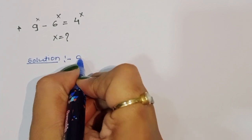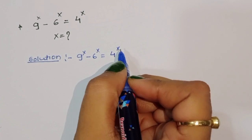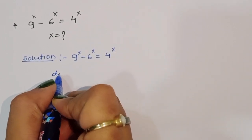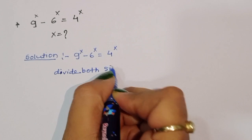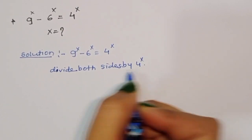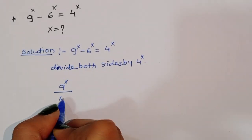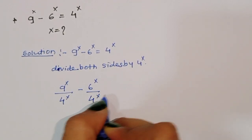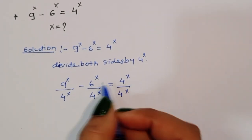First, what is given: 9^x minus 6^x is equal to 4^x. Now divide both sides by 4^x. Then we will get 9^x divided by 4^x, minus 6^x divided by 4^x, is equal to 4^x divided by 4^x.